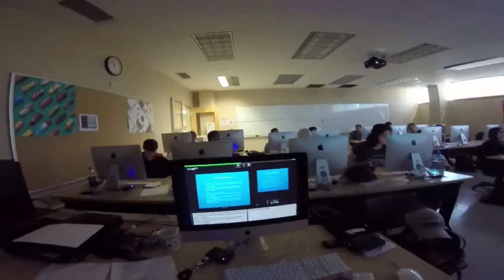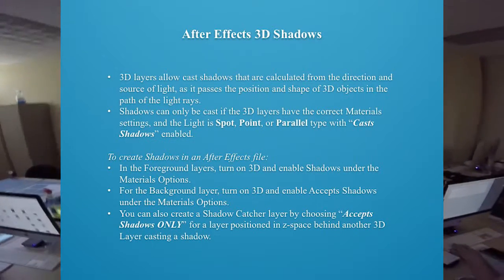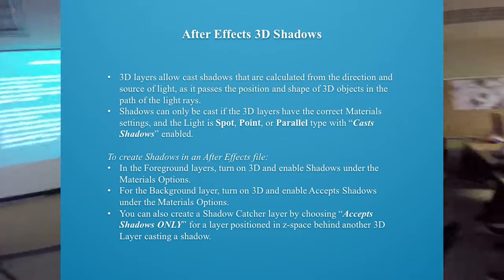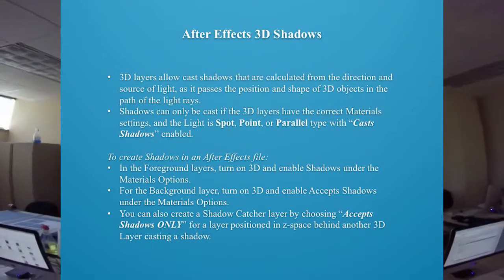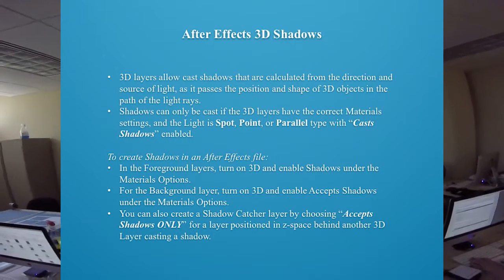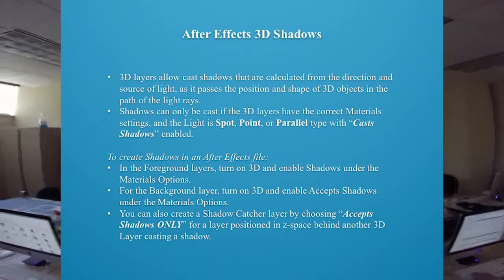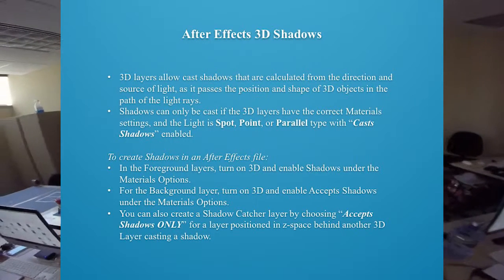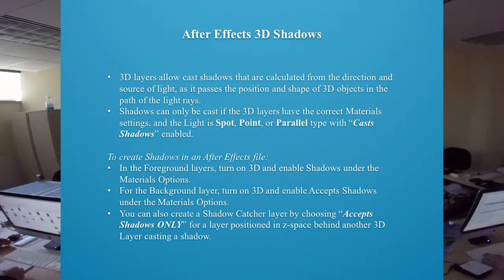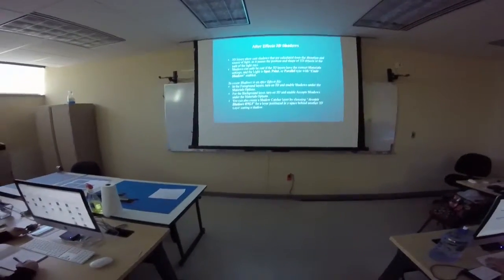Shadow layers. 3D layers can cast shadows calculated from the direction and source of light as it passes 3D objects. Shadows can only be cast if the 3D layers have the correct material settings, and if the light is a spotlight, point light, or parallel type with cast shadows enabled. To create shadows: for foreground layers, turn on 3D and enable 'cast shadows' under material options. For background layers, turn on 3D and enable 'accept shadows.' You can also create a shadow catcher layer. But there must be a light or no shadows will happen.